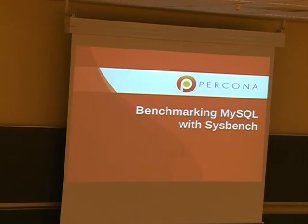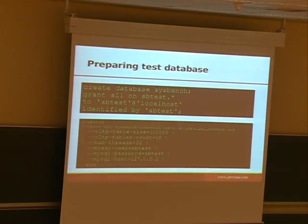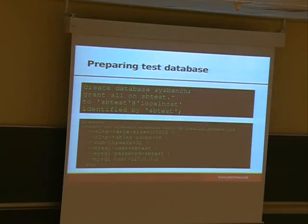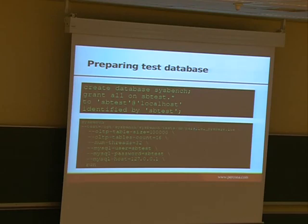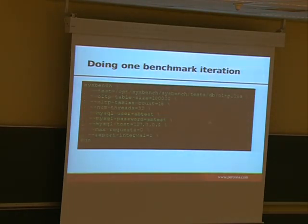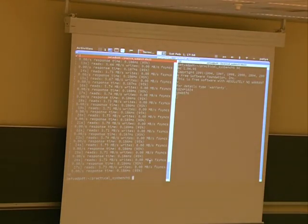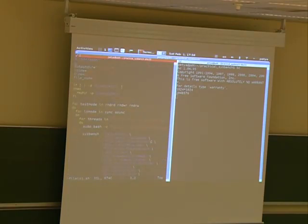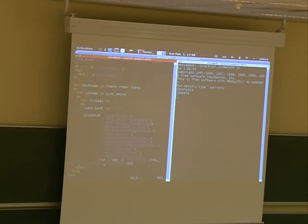So far this was file.io, benchmarking your IO subsystem. Now let's talk about benchmarking MySQL. Here is how you can prepare a test database: you create a schema, use that schema, and use the parallel_prepare.lua script to create your test database in parallel. Usually you write scripts that iterate over all test modes, all IO modes, all thread configurations, run the benchmark, and aggregate the results at the end.